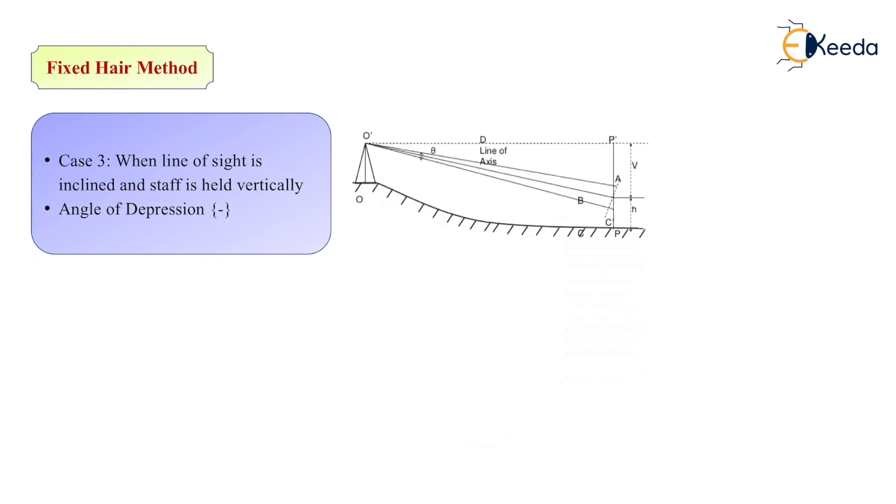Now in third case, we have line of sight inclined and staff held vertical, but in this case angle of depression is there. In second case we have elevation, here we have depression. The formulas to calculate D and V are same as we have seen in previous case. Just over here, as you can see, the line of sight is above your mid point. The mid reading to the line of sight is known as V, and from your middle reading to the ground, that is H, which is also known as axial reading. The formula for D and V are same as we are discussing in case 2.